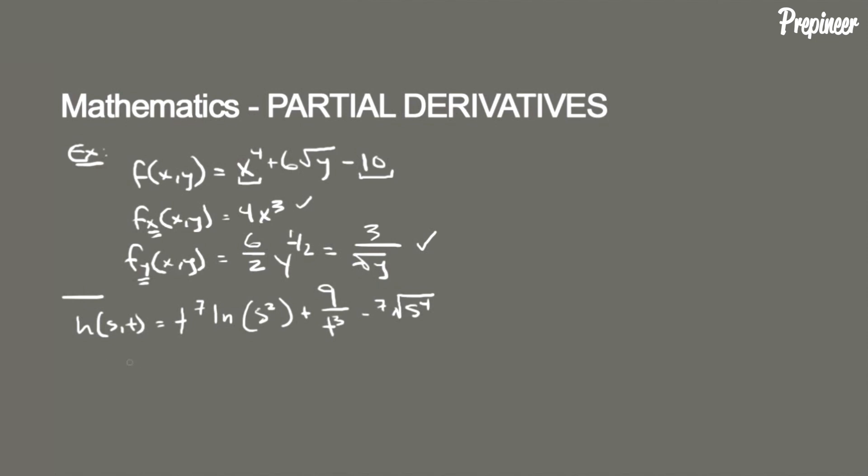So let's first find the partial derivative of this function with respect to s. Let's use this notation: partial derivative of h with respect to s. And once again we're going to hold all the t values constant.